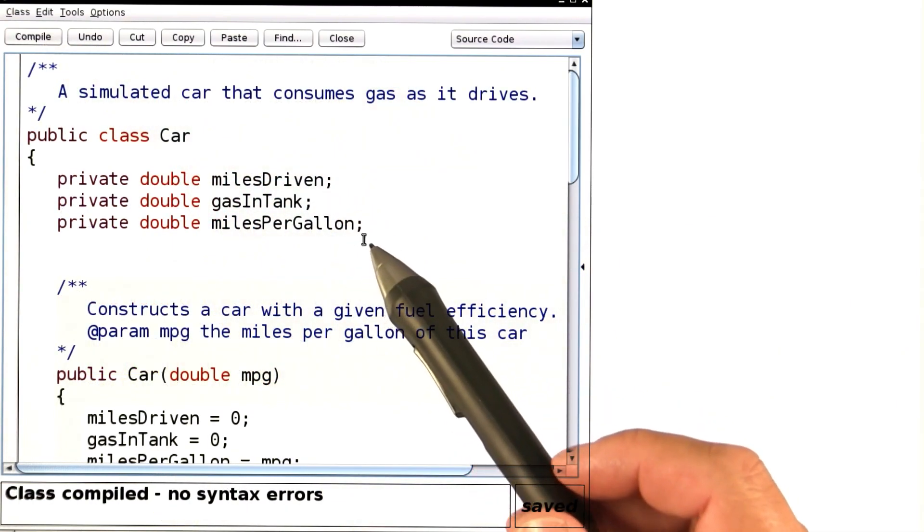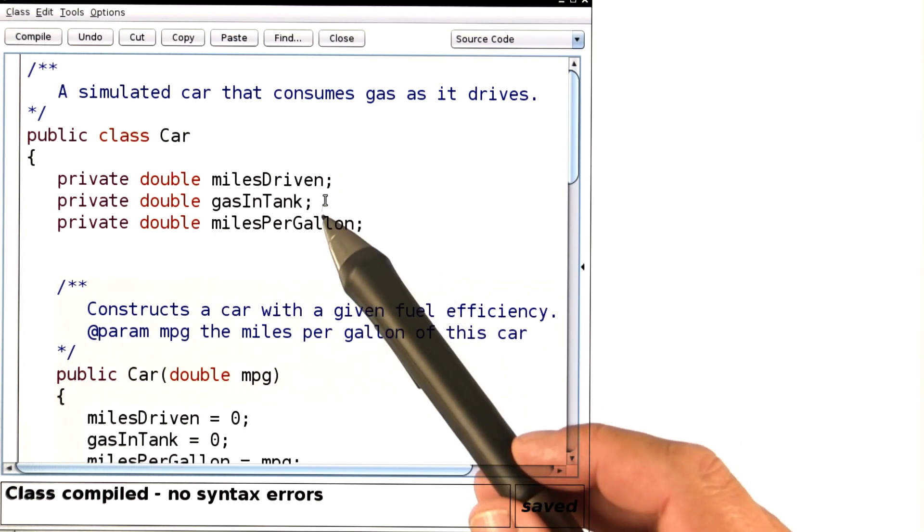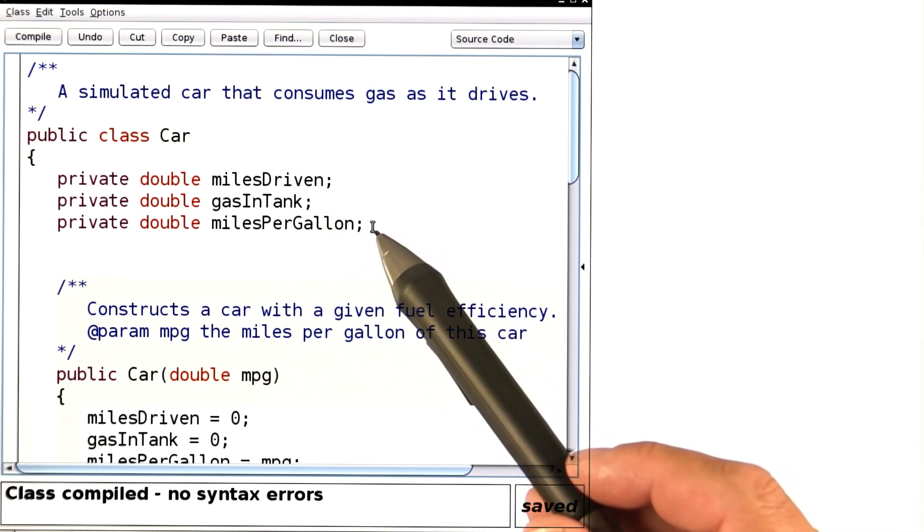And when we review the instance variables up here, we'll find that there are no unnecessary ones. The car does need to remember the miles driven at the gas level across multiple method calls. And of course, it needs to know the mileage so that it can compute the gas consumption.